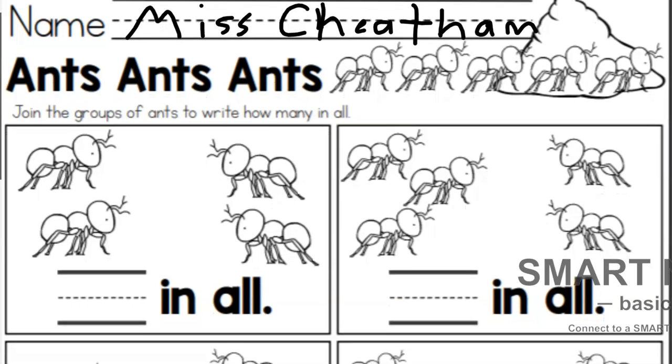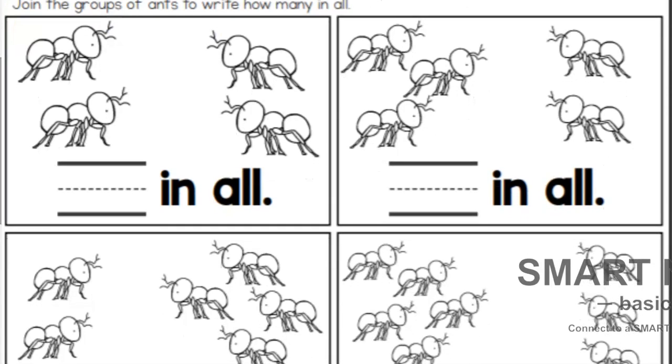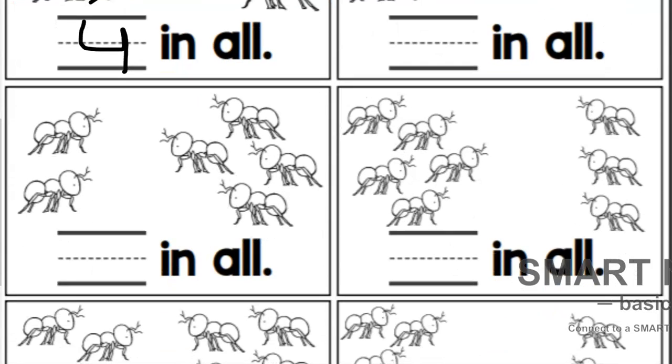And it says, join the groups of ants to write how many in all. So I'm going to count this first one. I have one ant, two ants, and then one ant and two ants. I know I have two on this side, so I'm going to scoop up my two and keep counting. Two, three, four. I have four in all. I want you guys to finish the rest of this worksheet and then we'll come together to check our answers, okay? So you may begin on that.